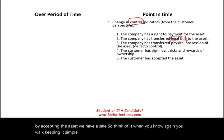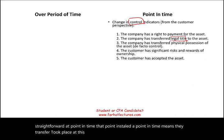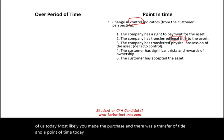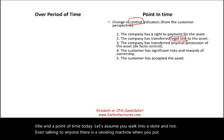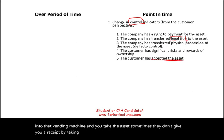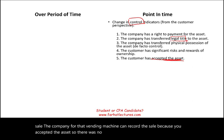Point in time means the transfer took place at this moment and you can recognize the revenue. For example, let's say you walk up to a vending machine. When you put your money in and take the asset — sometimes they don't give you a receipt — by taking the asset, you accepted it. That's a sale. The company can record the sale because you accepted the asset, even with no formal legal title transfer. You just bought a chocolate bar.